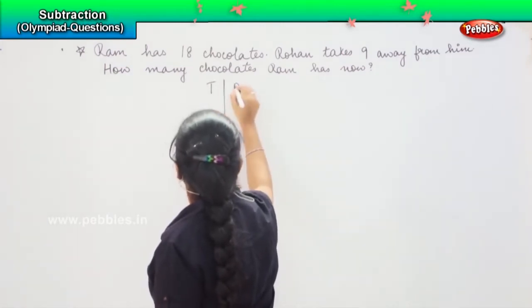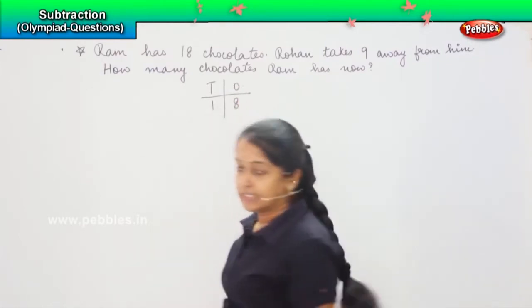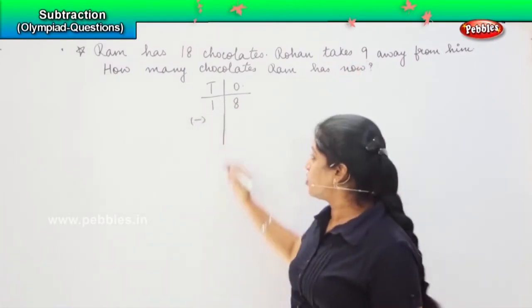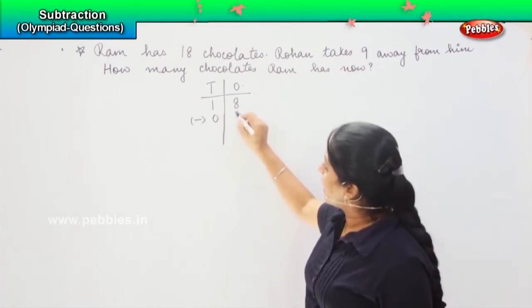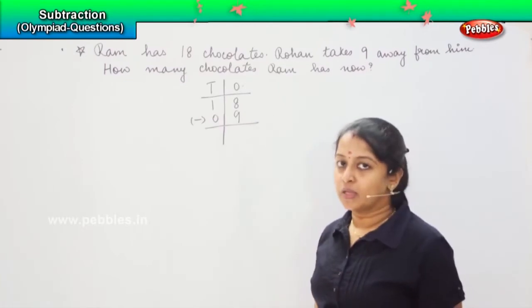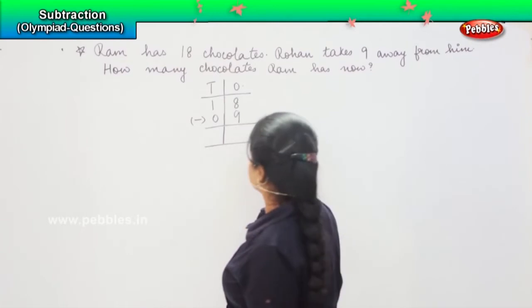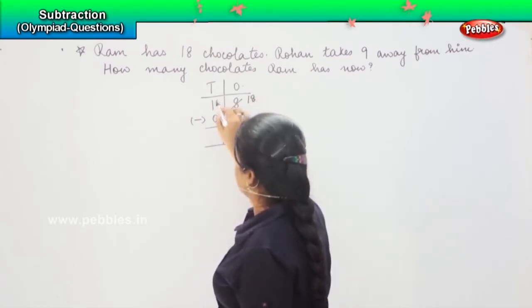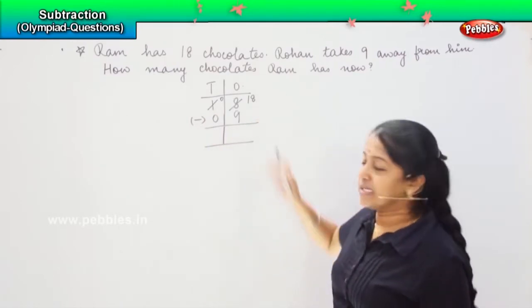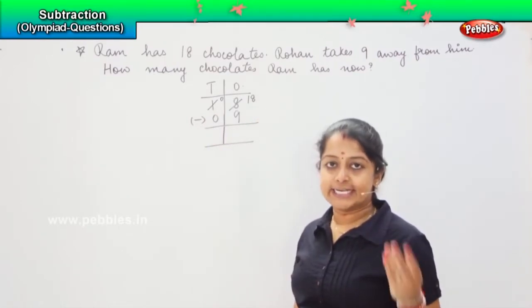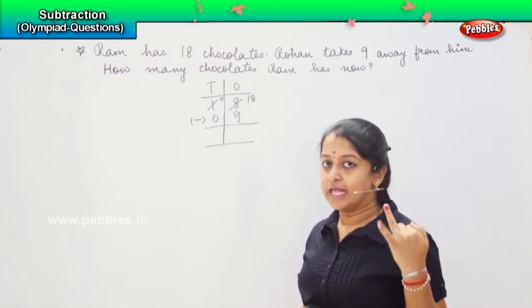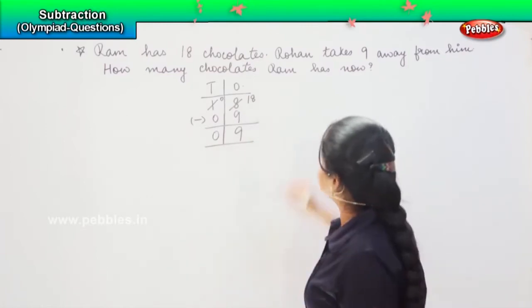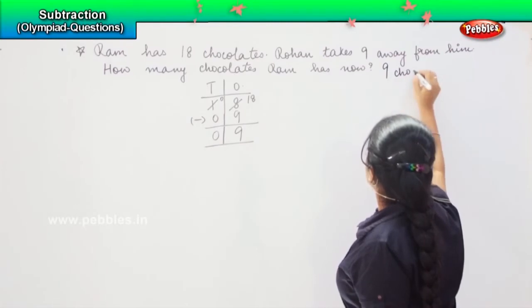Again, 18 can be written as 1 ten and 8 ones minus how many did Rohan take? Rohan has taken away nine chocolates. So, you will write here 0 and 9. So, 8 is less than 9. It is not possible to reduce from 8. So, I will borrow one number. This becomes 18 and this becomes 0. So, 18 minus 9 is 9. And 0 minus 0 is nothing but 0. So, which means that Ram has now 9 chocolates left.